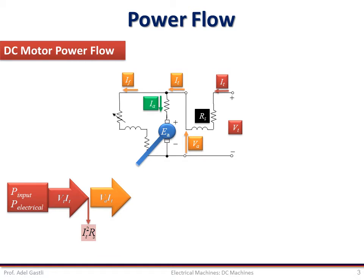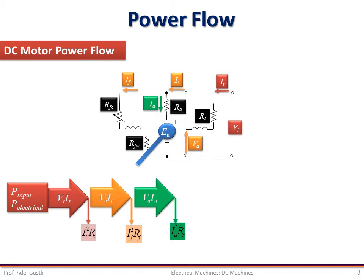The terminal current splits into two components: a shunt field current and an armature current. In the shunt field winding, the field current flows through the total equivalent field resistance RF, causing shunt field copper losses equal to IF² × RF. On the other side, the armature current flows through the armature winding resistance RA, causing armature copper losses IA² × RA. The remaining power is determined by EA × IA, where EA is the back EMF.